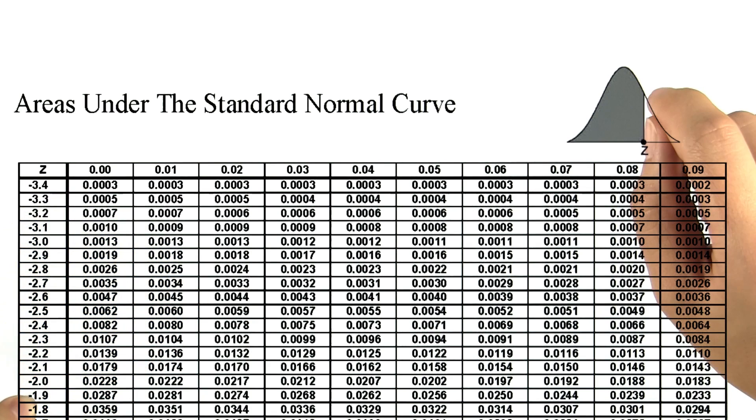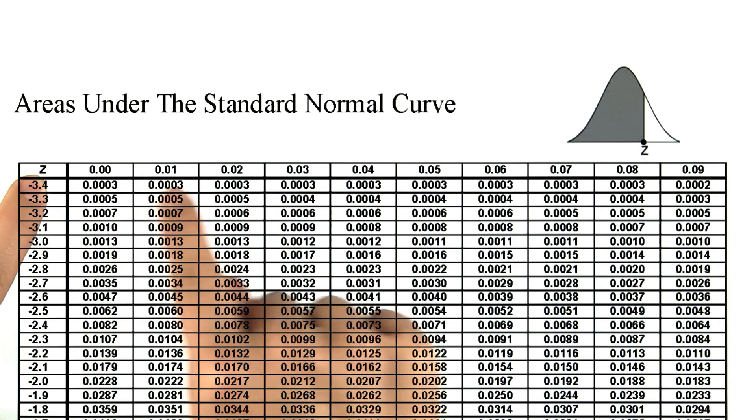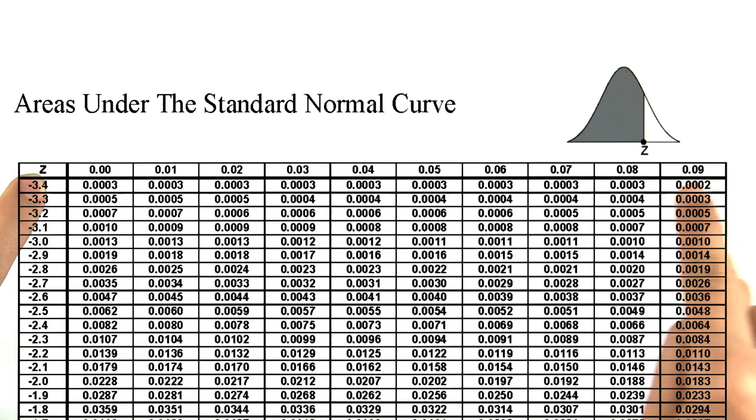In this table, the tenths place runs vertically, and the hundredths place runs horizontally.